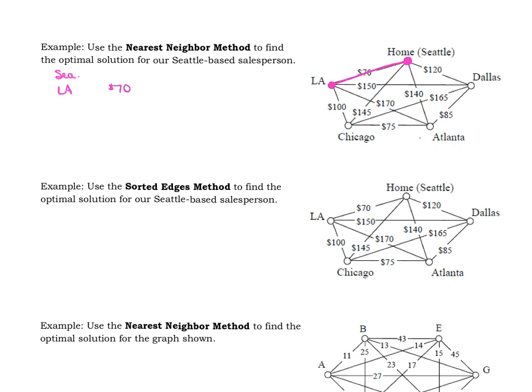Then it says, at the second vertex, travel to another unvisited vertex using the edge with the least weight. So we're not going to go back to Seattle. It's not time to go home yet. We have to go do sales presentations in these other cities. So from LA, we could go to Dallas at $150, Atlanta at $170, or to Chicago at $100. Chicago's the cheapest, and so that's the one we're going to add next at $100. We're going to fly from LA to Chicago.